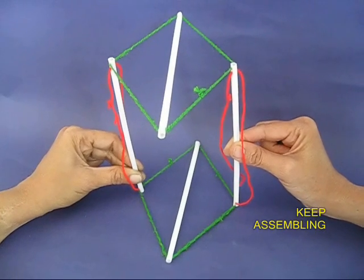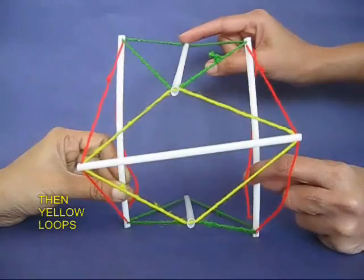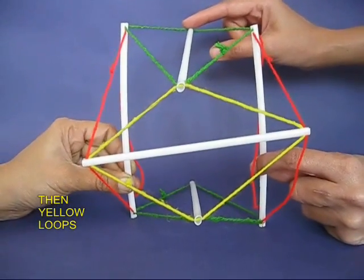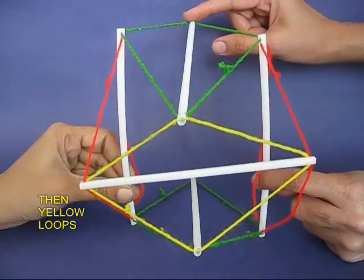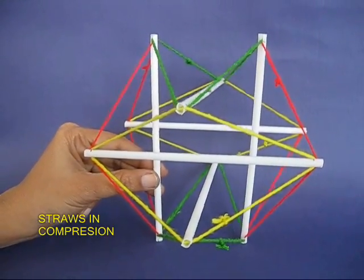First you make two green loops, then you hang these with the two red loops. Finally, insert the yellow loops, and once you have done this, the icosahedron model would be ready.